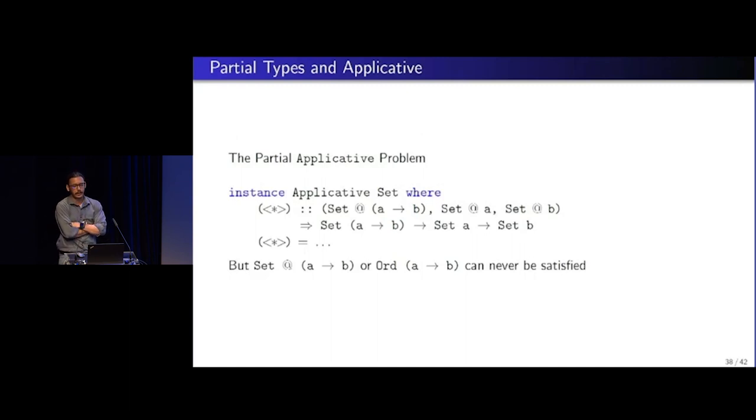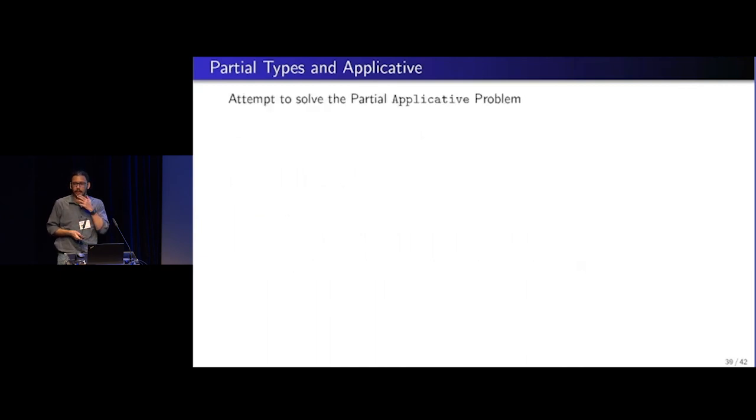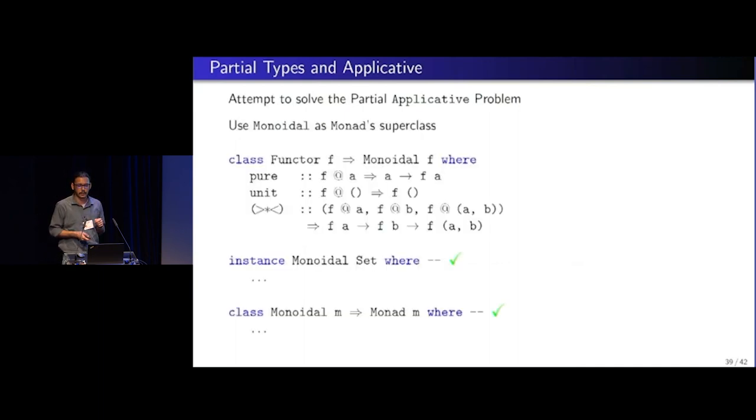And let's dig in deeper as to what it would exactly mean for a partial applicative instance, right? So let's try to define an applicative set. And we see that splat now has this weird constraint, like set at function type. Now, what does this even mean, right? We need, this means that we need to have an ordering on functions. But as we previously noted, this kind of does not make sense for Haskell programs. So how do we solve this?